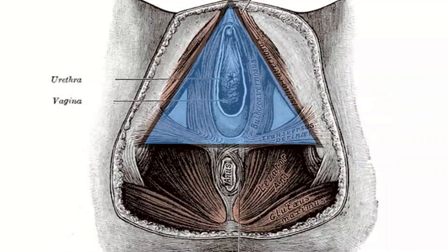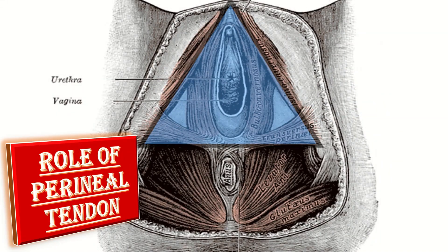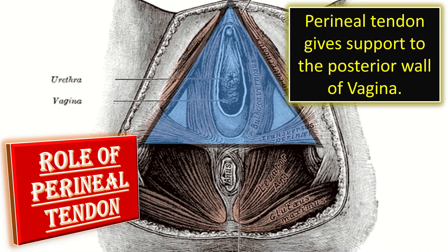Now, what is the role of the perineal tendon? The perineal tendon gives support to the posterior wall of the vagina.